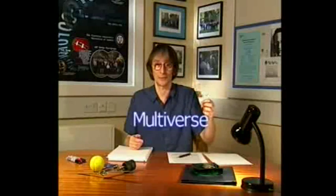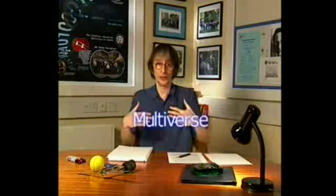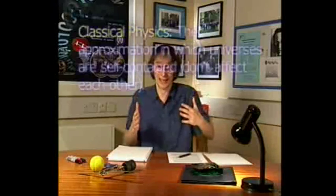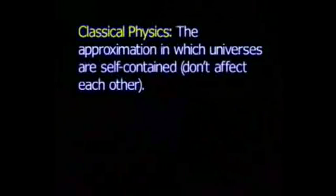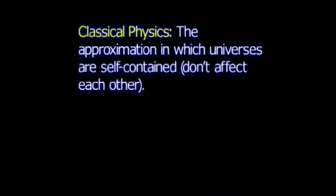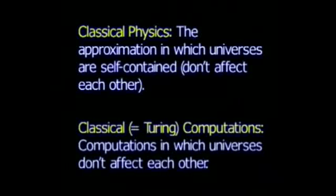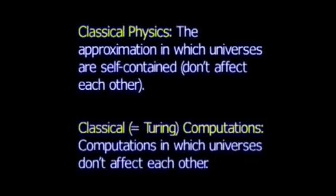If there are many universes, we need a new word to denote physical reality as a whole, and that word is — instead of universe — multiverse. Our universe, then, is, to some approximation, a self-contained entity within the multiverse. This approximation is called classical physics, pre-quantum physics. And in computation theory, it's called classical computation — that is to say, Turing-type computation.